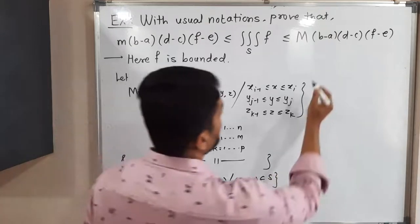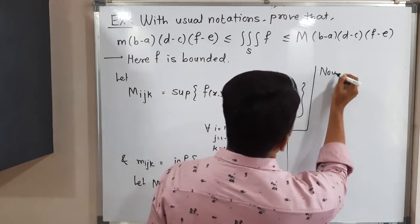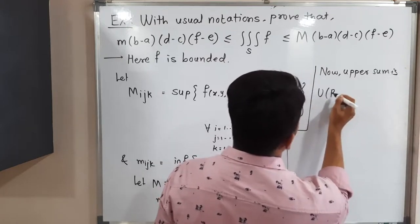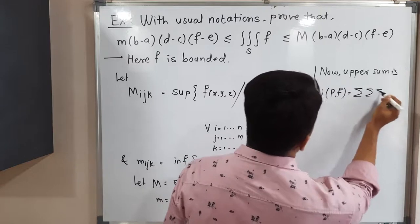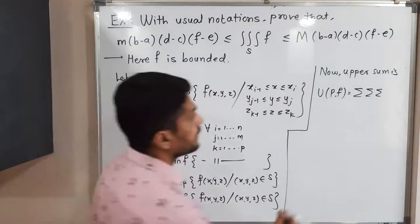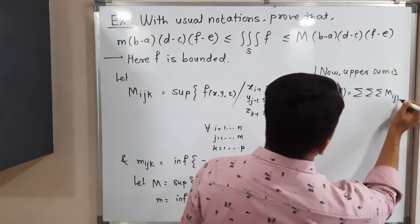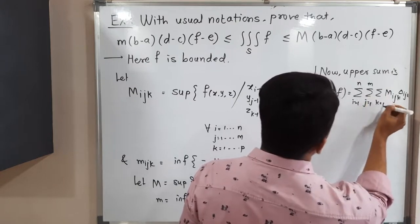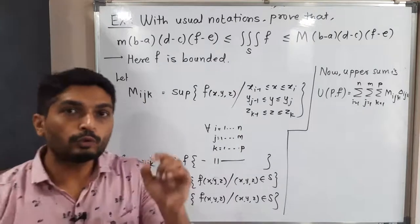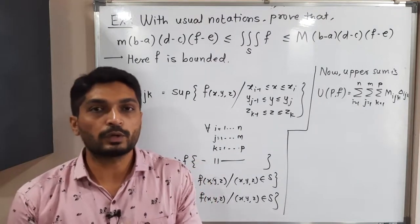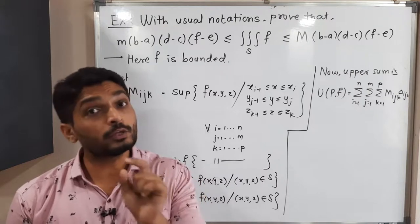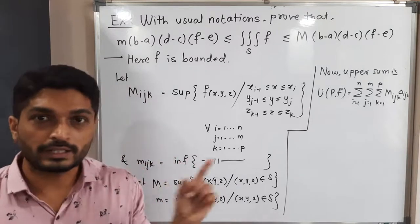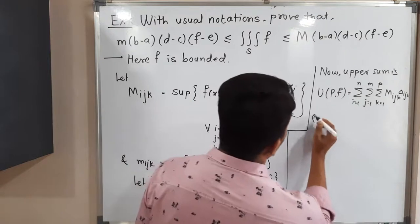Now let us go for upper sum and lower sum. The upper sum is defined as U(P,f) = Σ_i Σ_j Σ_k M_ijk · Δ_ijk, where i runs from 1 to n, j from 1 to m, and k from 1 to p. Here Δ_ijk is the volume of each subcuboid — similar to double integration where we take M_ij times the area of a rectangle, but here we use the volume.